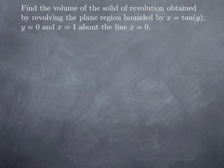A third example. Let's say we want to find the volume of the solid of revolution obtained by revolving the plane region bounded by x equals tangent of y, y equals 0, and x equals 1 about the line x equals 0. The line x equals 0 is the y-axis, so this time we consider rotation about a vertical line.